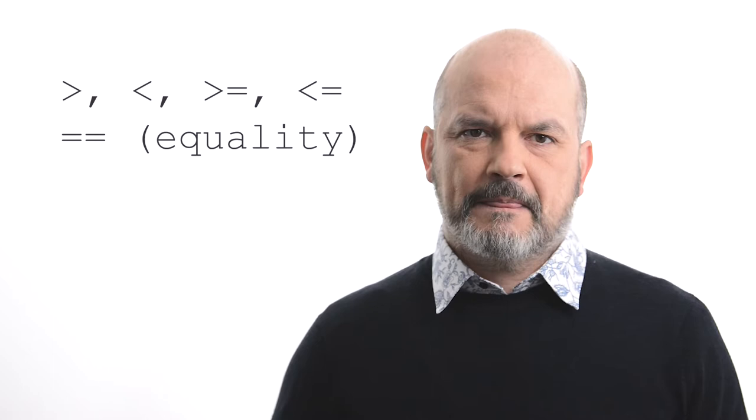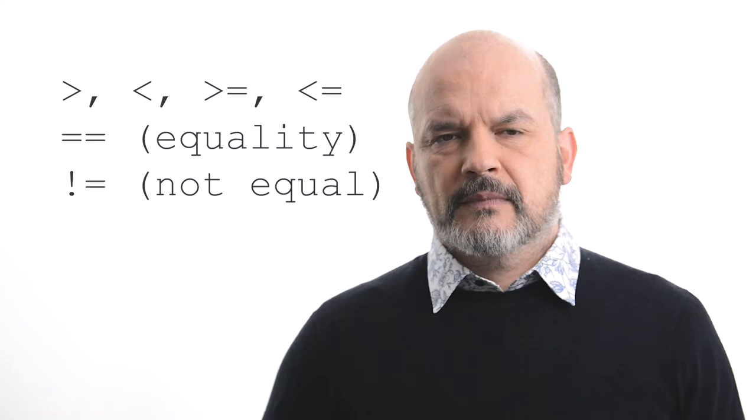Finally, the last operator is not-equal. The result of a comparison expression is a boolean. For example, the result of the expression 10 less than 7 is the value false, whereas the expression 10 greater than 7 evaluates to true.